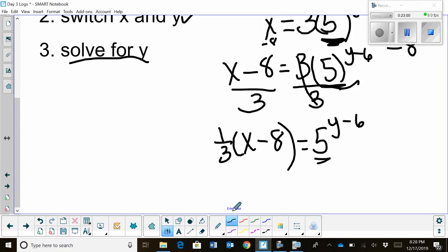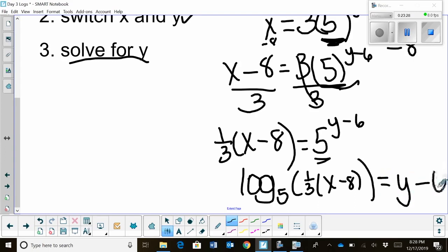What's my next step to write the inverse? I have to get this y out of the exponent, and the only way to do that is to rewrite it as a log. So log base, well, the base is five of this quantity, which is one-third times x minus eight, is equal to the exponent, which is y minus six. Have I got the y by itself? Not quite yet, but I'm close, because all I need to do now is move the constant.